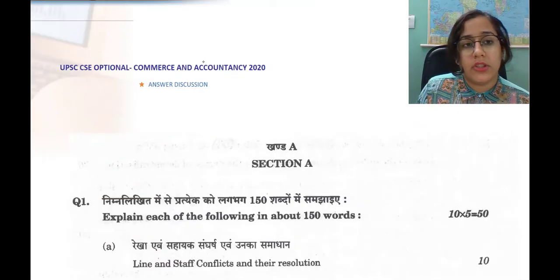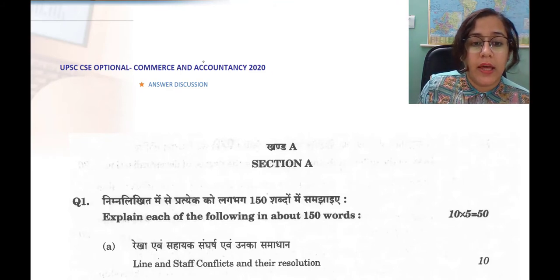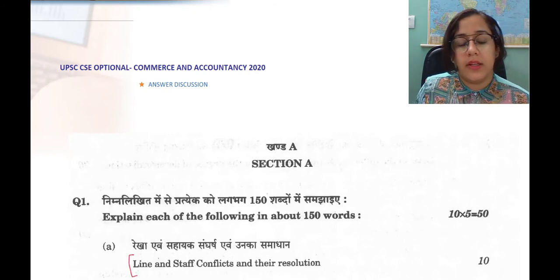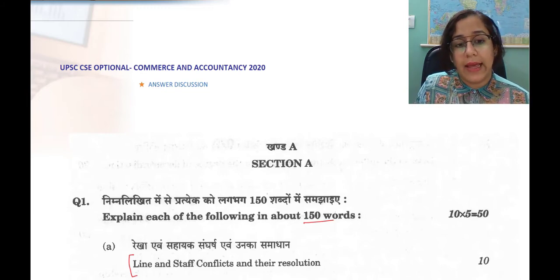Let us take up the first question. We all know that the first question is a mandatory one in the optional and therefore it is better if we revise this first. Question number 1 says explain each of the following in about 150 words. This is for 10 marks. The first one is line and staff conflicts and their resolutions.